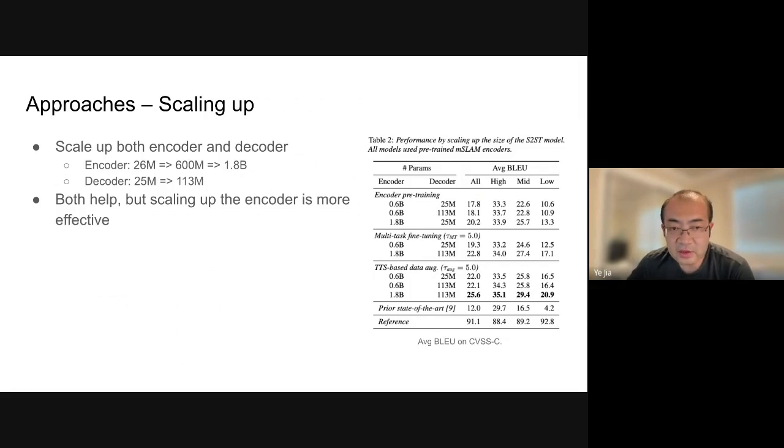The results are shown in the table on the right. You can see scaling up either encoder or decoder helps, but scaling up the encoder is more effective. The last row in the third group in the table showed our best result, and you can see that's much better than the previous state of the art. It's like more than two times.